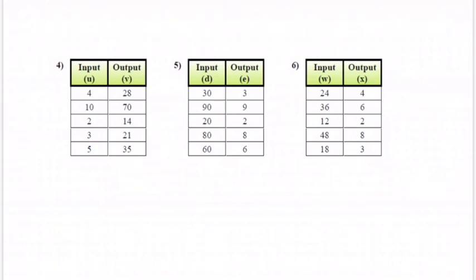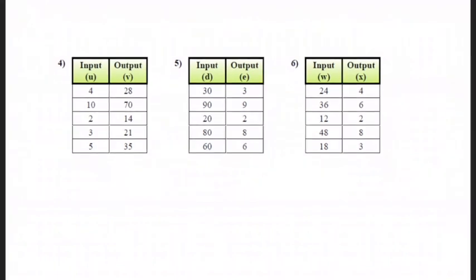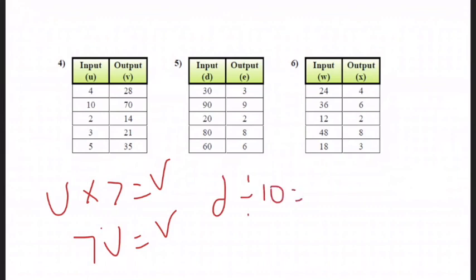Okay, so first one, I'll give you the answers. We have u times 7 equals v, or you could write 7u equals v also if you wanted. Number 5 is d divided by 10 equals e. And number 6 is going to be w divided by 6 equals x.